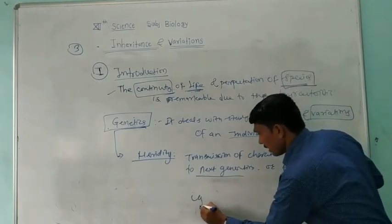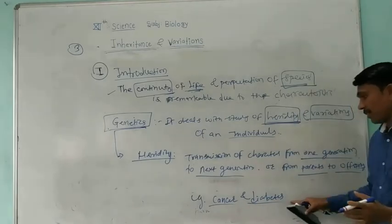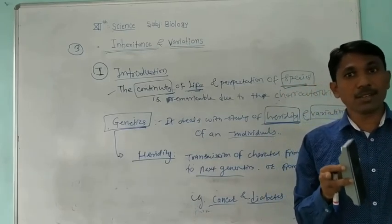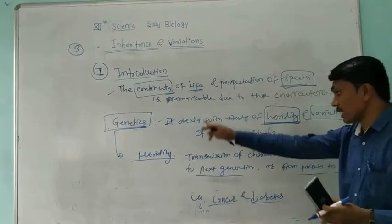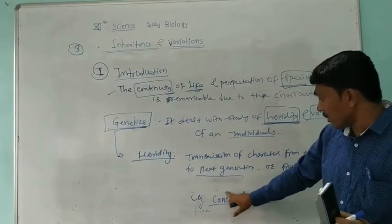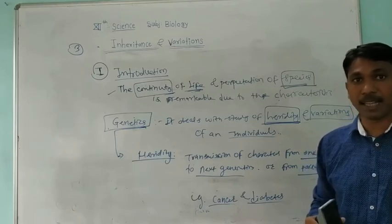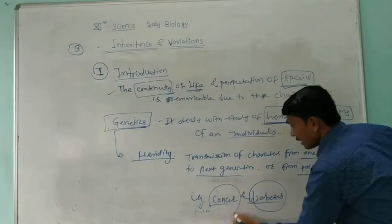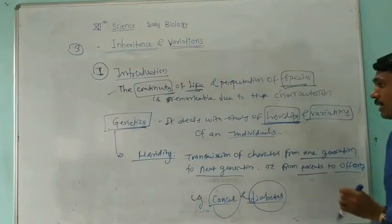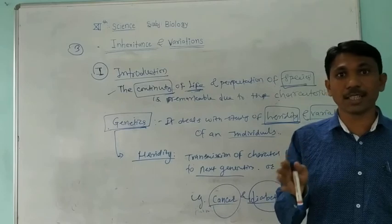For example, we see the diseases of cancer and diabetes. Sometimes it may be that a disease is transferred from parents to their child or offspring. There may not be 100% chances to transmit the disease from parents to their child, but it may be possible. That is the character — sometimes the disease can be found in their parents. That is Heredity: transmission of characters from one generation to the next, or from parents to offspring.